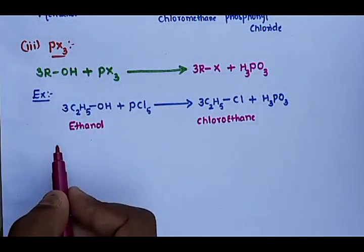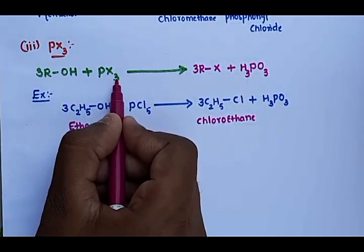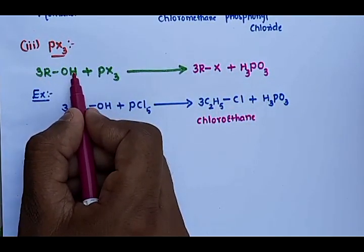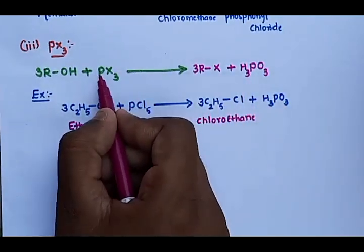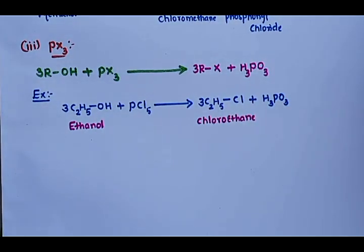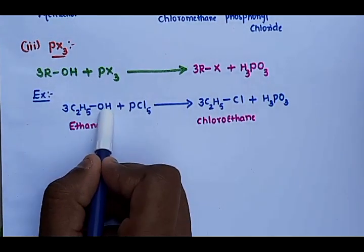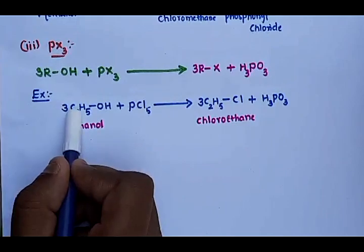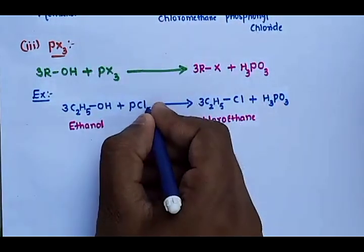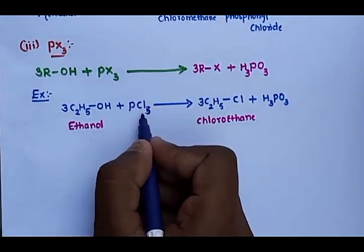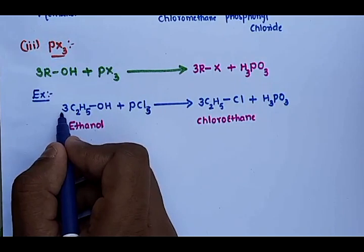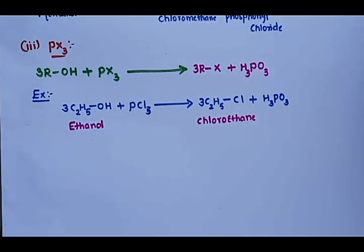Three R groups combine with three X groups to give 3RX. Three oxygen atoms and three hydrogen atoms remain as H₃PO₃ along with phosphorus. For example: 3 C₂H₅OH plus PCl₃ gives 3 C₂H₅Cl plus H₃PO₃. This is the third method for the preparation of haloalkanes from alcohols.